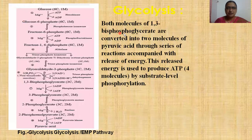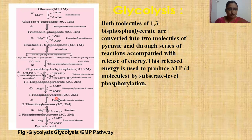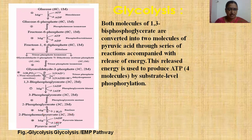Both molecules of 1,3-bisphosphoglycerate are converted into two molecules of pyruvic acid through a series of reactions accompanied by release of energy. This released energy is used to produce 4 ATP molecules by substrate-level phosphorylation. 1,3-bisphosphoglycerate is converted to 3-phosphoglycerate by enzyme phosphoglycerate kinase; 2 ADP is converted to 2 ATP. 3-phosphoglycerate is converted to 2-phosphoglycerate in the presence of phosphoglycerate mutase. Then 2-phosphoglycerate is converted to 2-phosphoenolpyruvate by release of a water molecule in presence of enolase enzyme, requiring Mg++ ions. Finally, 2-phosphoglycerate is converted into two molecules of pyruvic acid in the presence of pyruvate kinase enzyme, and 4 ATP molecules are produced.